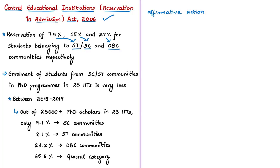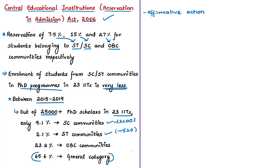Recently, a member of the Rajya Sabha raised a question about the total number of students admitted in PhD programs of each IIT along with their SC/ST/OBC composition from 2015. This news article is based on the data submitted in answer to that question. The data states that the enrollment of students belonging to Scheduled Castes and Scheduled Tribes in PhD programs in IITs from 2015 to 2019 is abysmally low. Out of more than 25,000 PhD scholars in 23 IITs, only 9.1% belonged to Scheduled Castes and only 2.1% to Scheduled Tribes, while around 5,800 students belong to Other Backward Classes.